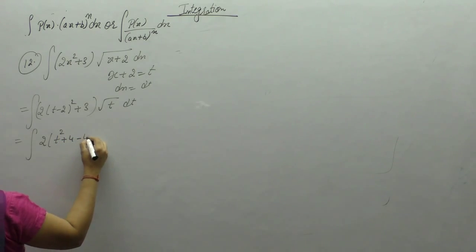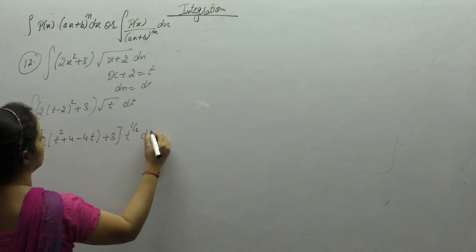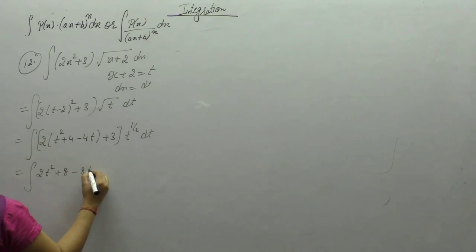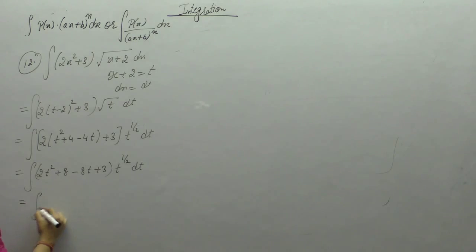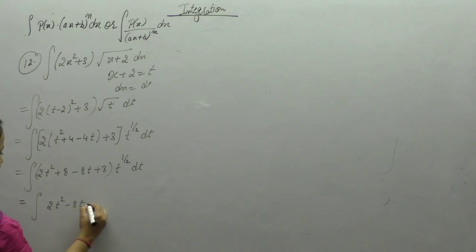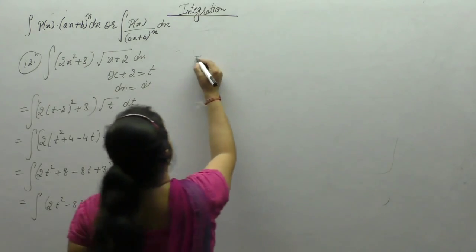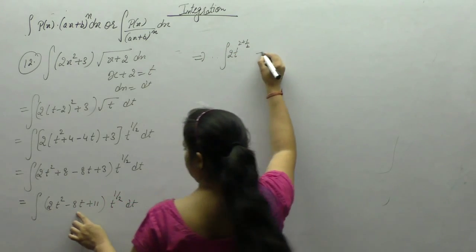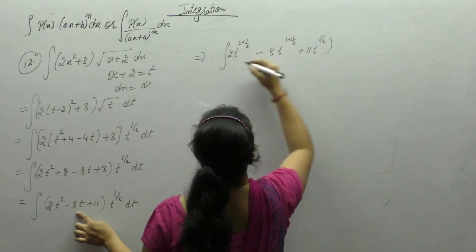Expand (t minus 2) squared as t squared plus 4 minus 8t plus 3, multiplied by t to the power 1 by 2 dt. This simplifies to 2t squared minus 8t plus 11, times t to the half dt. Now add the powers: 2 plus 1 by 2, minus 8t to the power 1 plus 1 by 2, plus 11t to the power 1 by 2 dt.